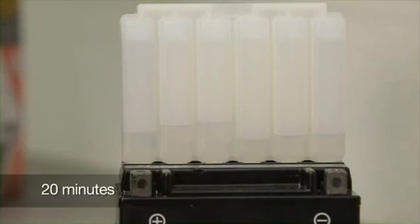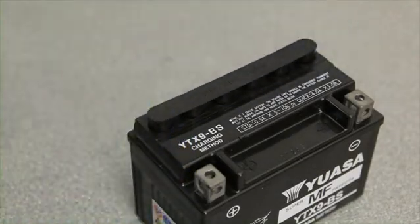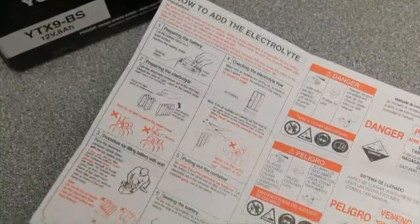Once empty, carefully remove the container and let the battery sit for one hour. After an hour, loosely place the cap strip over the filling holes and charge the battery according to the instructions included with the battery.